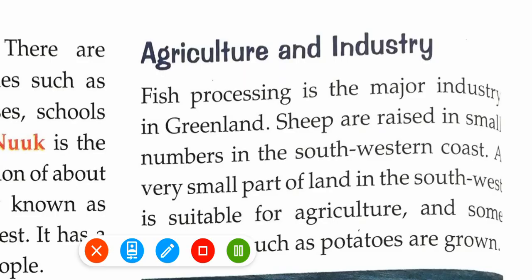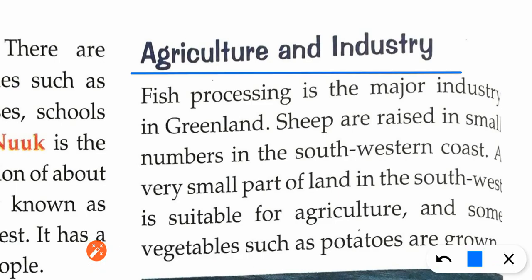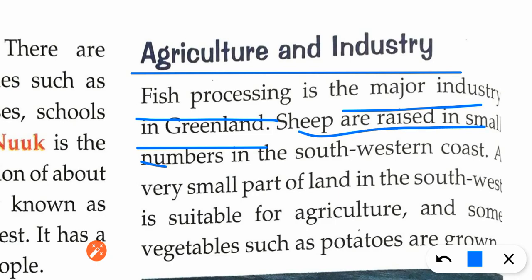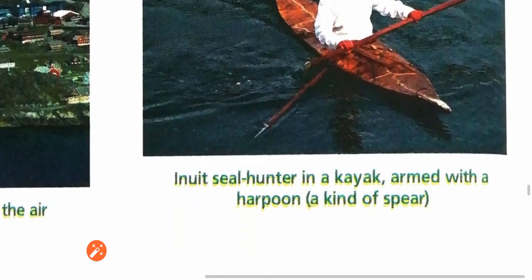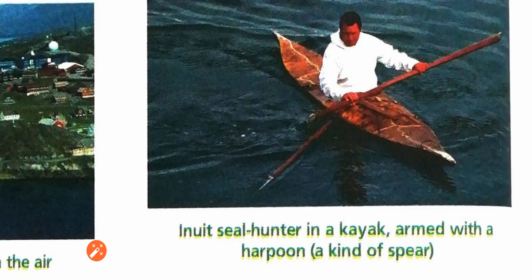The last topic is Agriculture and Industry. Fish processing is the major industry in Greenland. Sheep are raised in small numbers on the south-western coast. A very small part of land in the south-west is suitable for agriculture because most of the land is completely covered with ice. Only the south-west part is used for agriculture, and some vegetables such as potatoes are grown there.